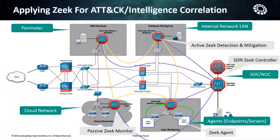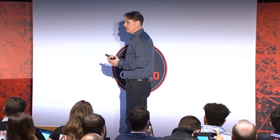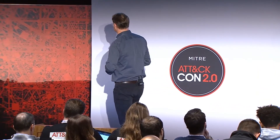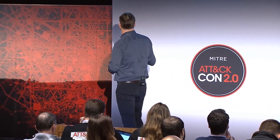A production environment is not as simple as that diagram I showed earlier — it's typically much more complicated. The key point is I want to be able to deploy Zeek detection in all these environments, not just on the perimeter, not just in the DMZ, not just in the cloud, but everywhere. If I'm designing a capability to detect sightings, I don't want just sightings on the perimeter. Most of my firewall is probably blocking that anyway — what I want is sightings inside my network and inside the cloud.